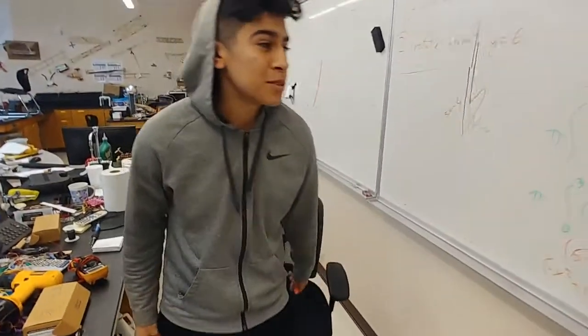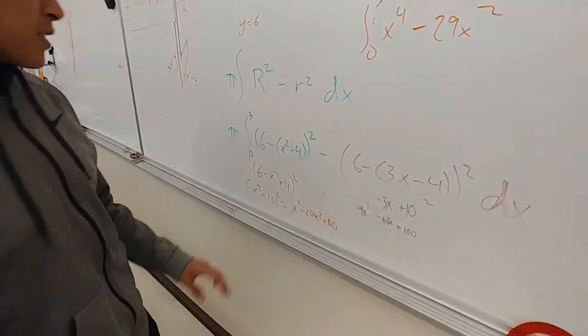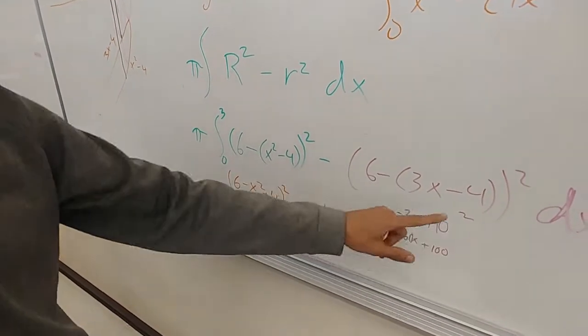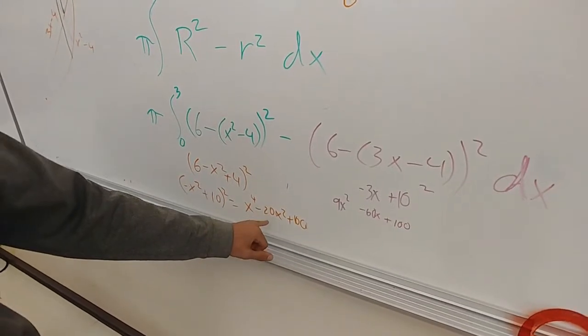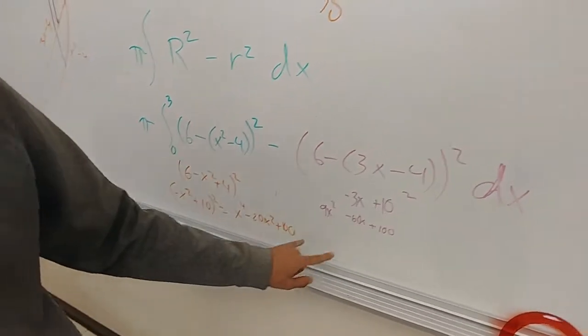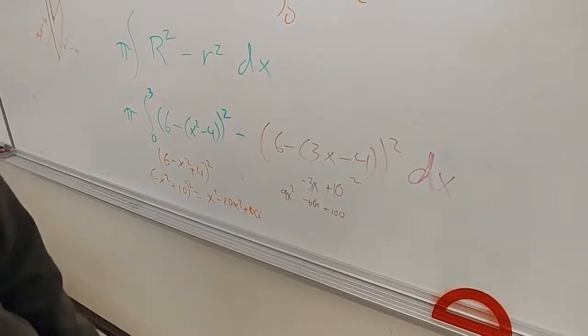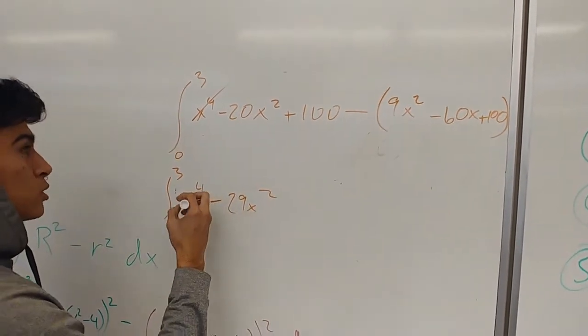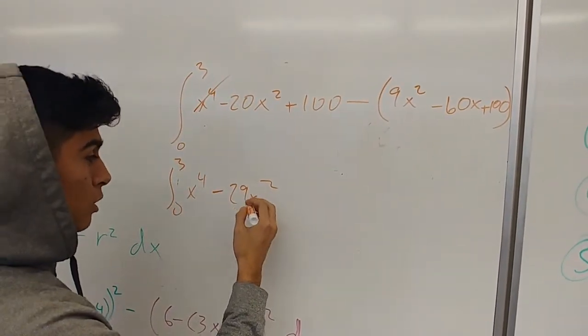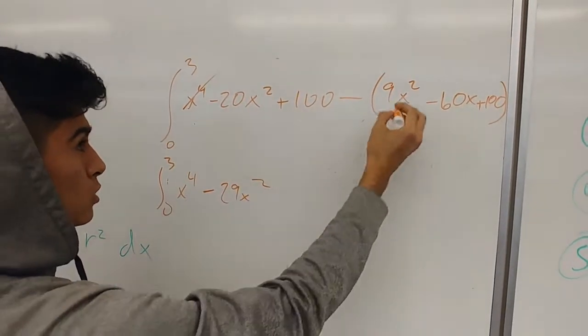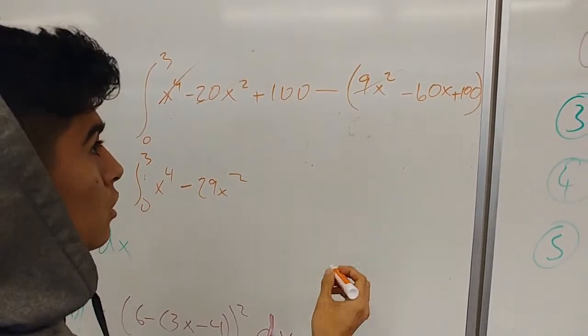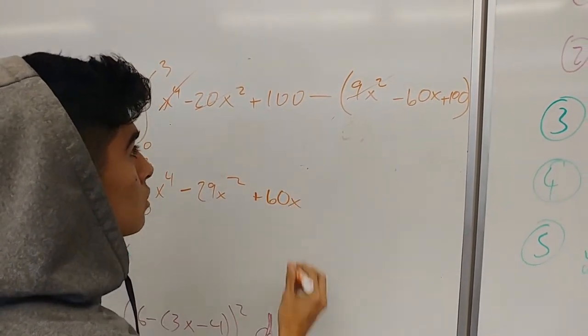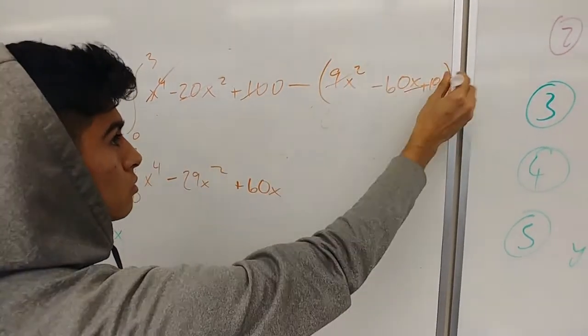So here, this is where we left off, and we just need to simplify our squares, which we got x to the fourth minus 20x squared plus 100 for this section, and for this section we got 9x squared minus 60x plus 100. Now we just need to simplify it even further. We just bring down the x to the fourth, and we got negative 29x squared for these two, and then we keep the negative 60, or positive now, 60x, and our hundreds just cancel out.